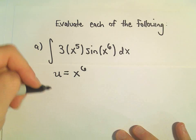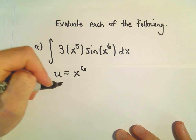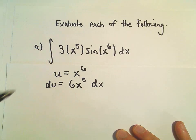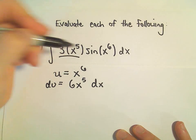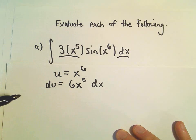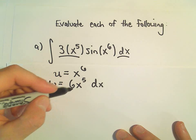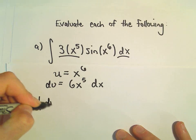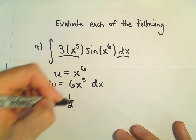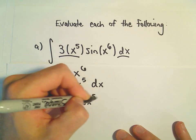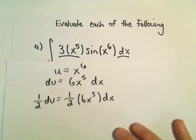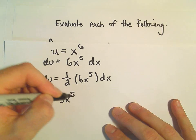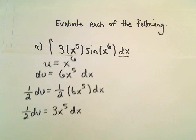So I'm going to pick u to be x to the 6th. Our du would be 6x to the 5th dx. So we've got a 3x to the 5th dx in our problem. Well, to get 3x to the 5th dx on the right side, we can just multiply both sides by 1 half. And then we'll be left with our 1 half du equals 3x to the 5th dx.